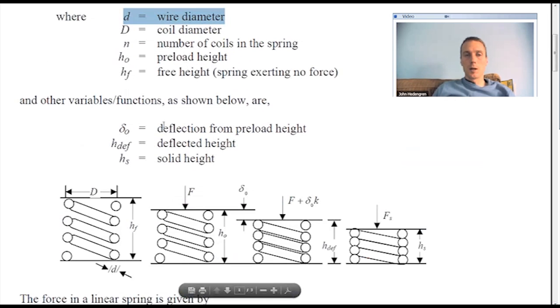So there's some other variables and functions here. You have the deflection from preload height, that's the delta knot. The deflected height HDF. So here you see a diagram of the springs. This is the preload height right here, that's going to be one inch right there. And you want to try to maximize the force of the spring at this preload height here. And this is the amount of deflection here, the 0.4 inches that we talked about above.